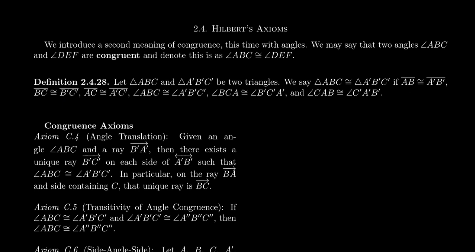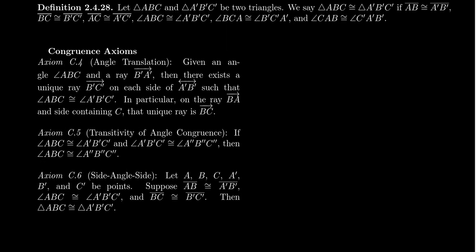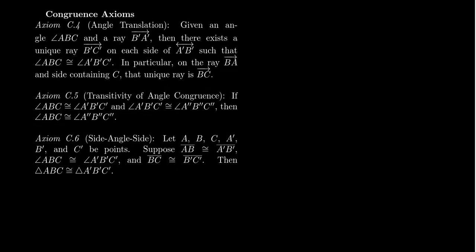Now we're ready to introduce the remaining congruence axioms: C4, C5, and C6, due to Hilbert's axioms of Euclidean geometry. The first two are very similar to what we saw before. We're going to take axiom C4 to be angle translation, which is similar to segment translation.